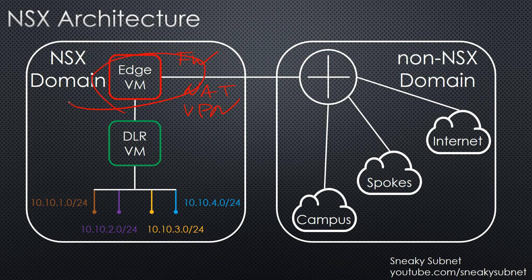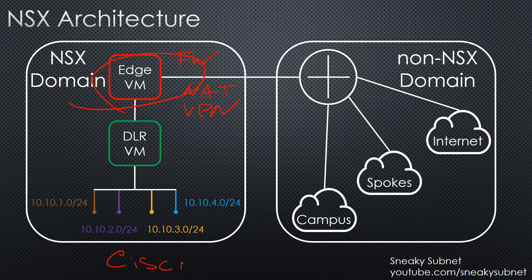To sum up, NSX is a really great product for your VMware virtual environment, which provides a lot of useful features and makes your life easier. But if you also need to upgrade your physical network, you may want to explore another SDN solution, for example Cisco ACI. I have the same overview video about that product as well, so please check it out. If you like this video, put your thumbs up, subscribe to my channel, and have a really nice day! Thank you!